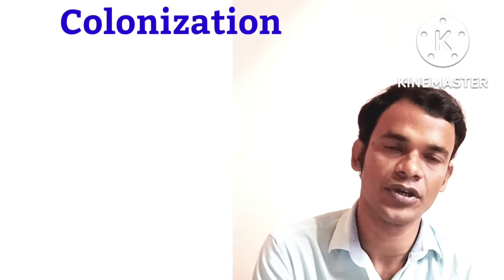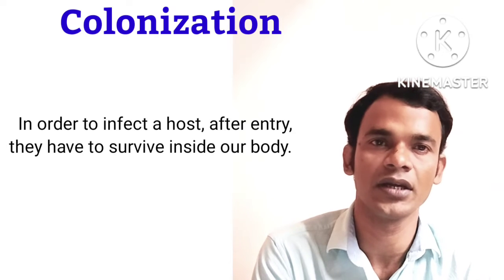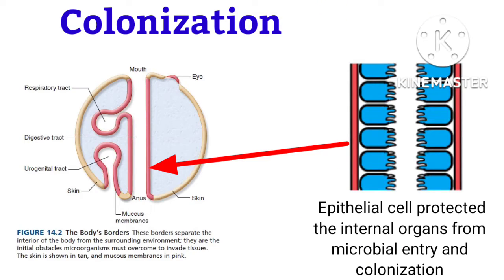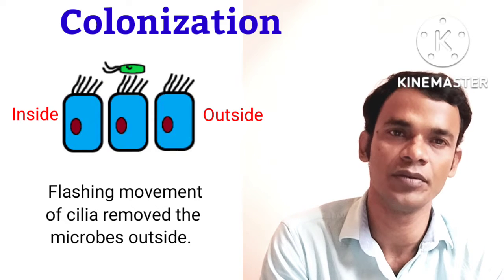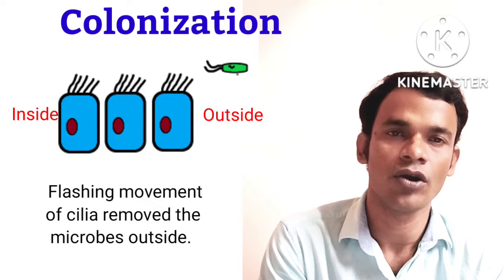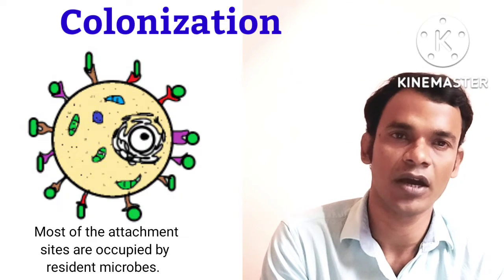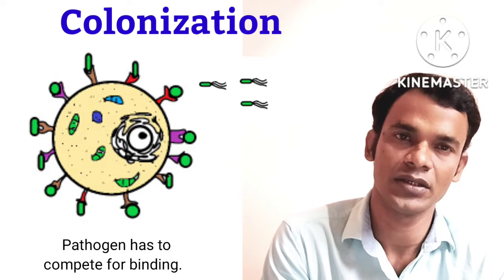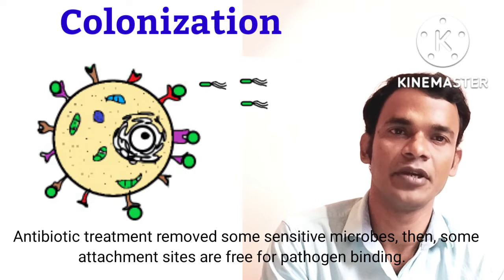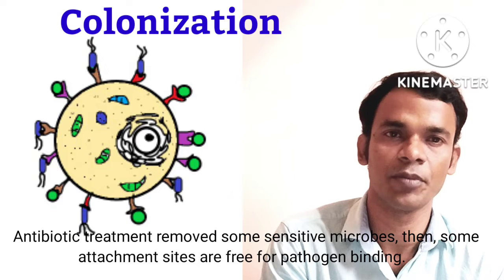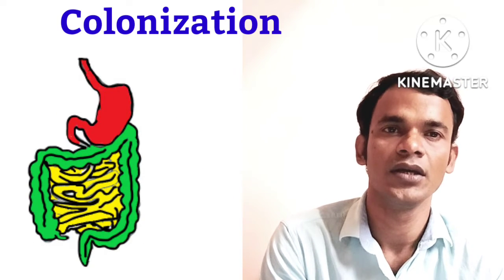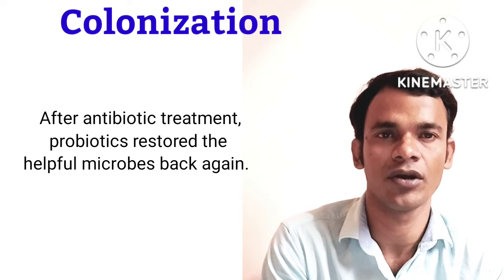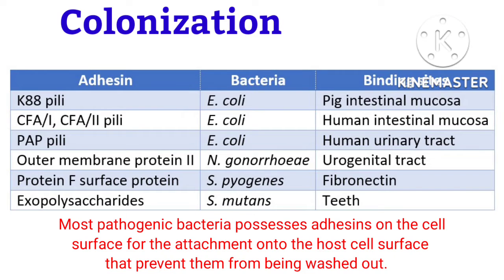Now let's look at the second stage of disease progression: colonization. After entry, bacteria must survive inside our body. Nearly all inner surfaces are protected by epithelial cells and mucous membranes. Flushing movements can remove invading bacteria effectively. Most areas are already occupied by symbiotic microbes. Competition arises due to limited binding sites on cell surfaces. After antibiotic treatment, sensitive symbiotic microbes are killed, allowing pathogenic microbes to gain access to the gut without competition. That's why doctors recommend probiotics to restore helpful microbes. Most pathogenic bacteria possess adhesins on their cell surface for attachment onto the host cell, preventing them from being washed out.